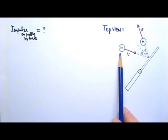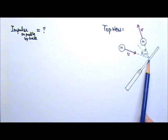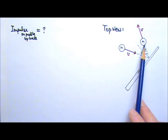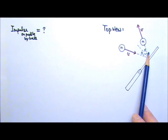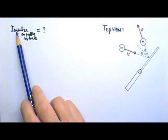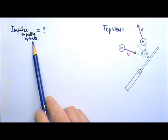A ping-pong ball of mass m hits a firmly held ping-pong paddle with a speed v. The ball rebounds at the same angle theta with the same original speed v. Find the impulse on the paddle by the ball.